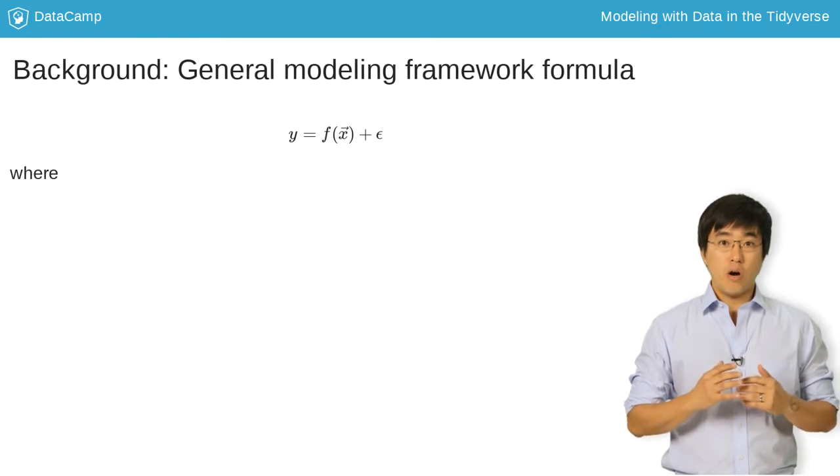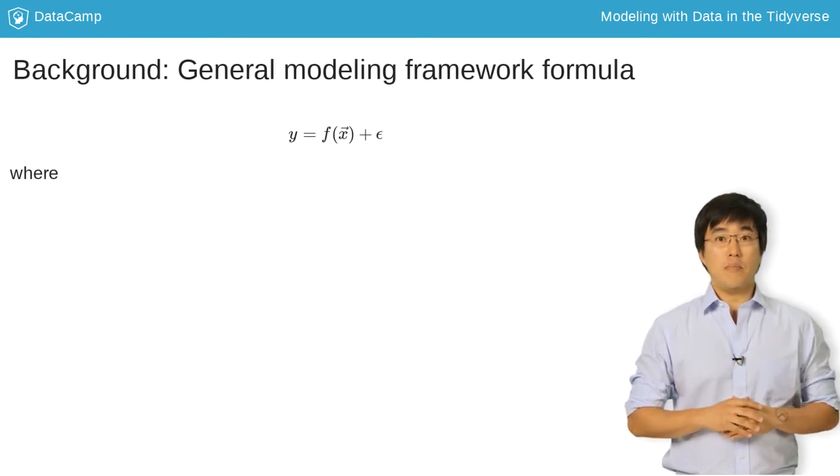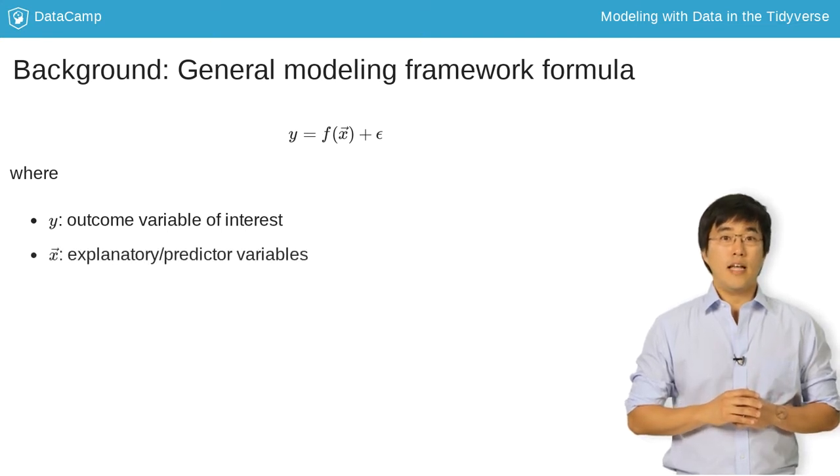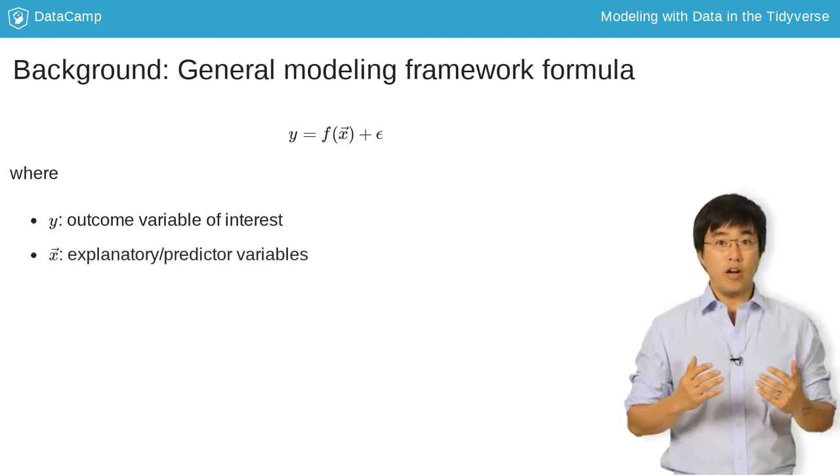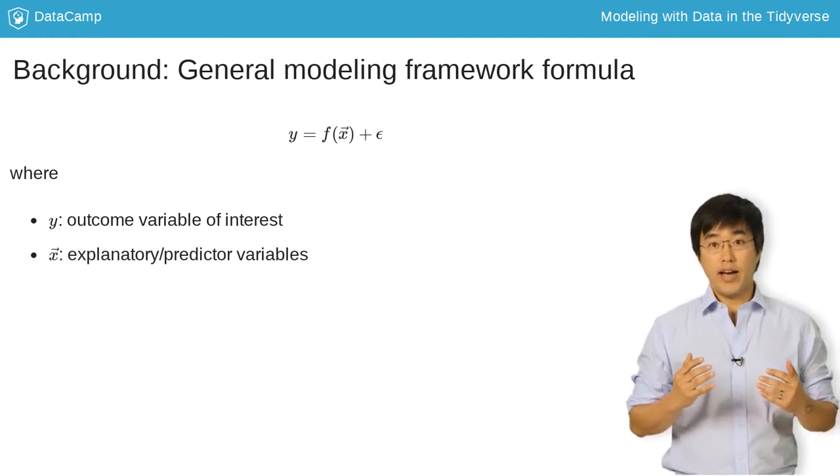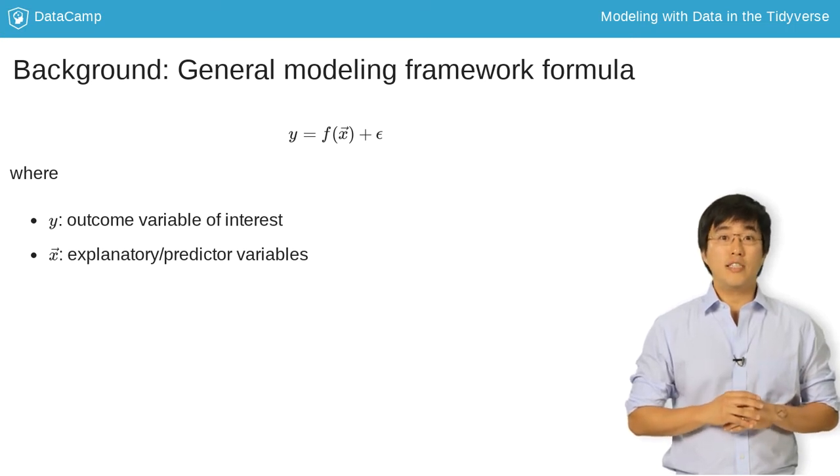Let's start with the general modeling framework, as expressed by the following formula: where you have Y, an outcome variable, the phenomenon you wish to model; X, a set of explanatory or predictor variables used to inform your model. The arrow on the X indicates that X can be a vector, in other words, a series of values.